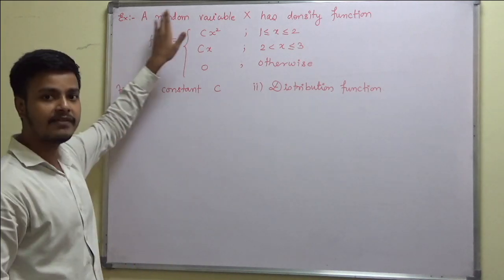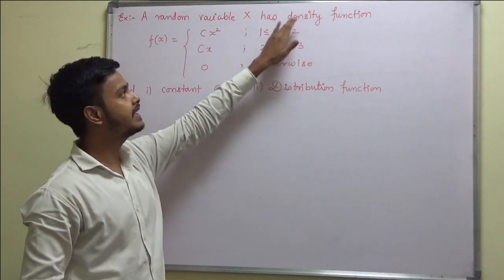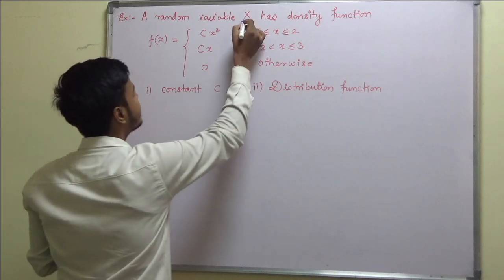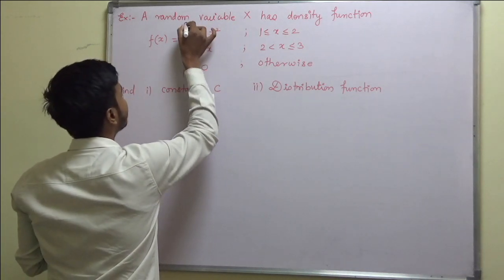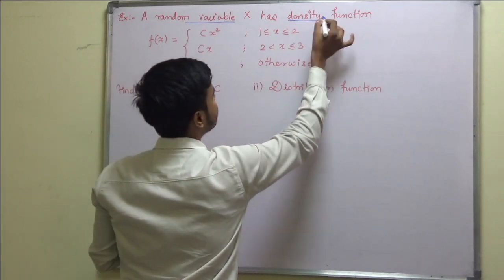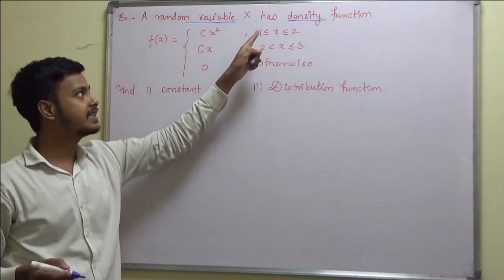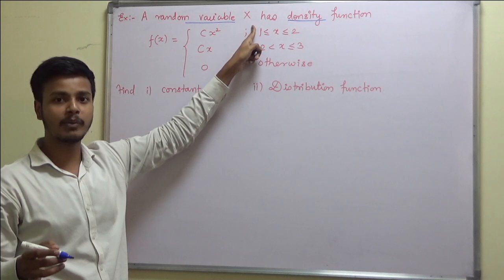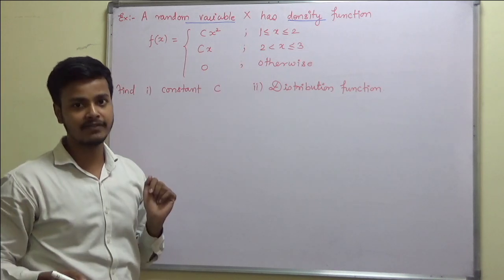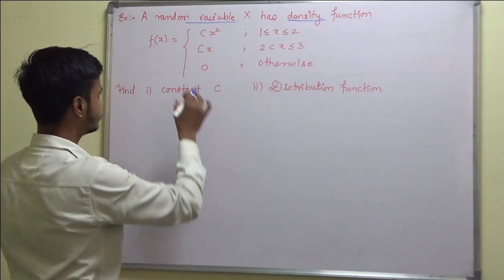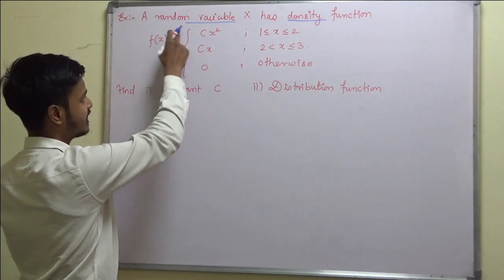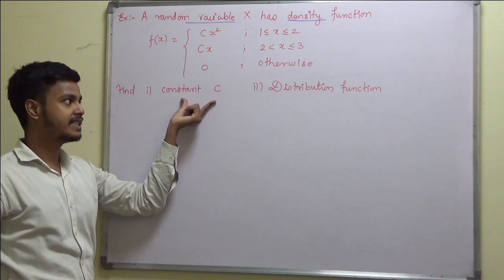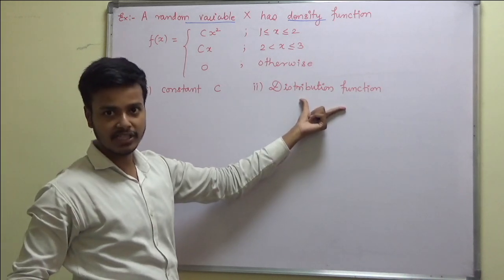The example says a random variable x has a density function. Whenever it says a random variable x density function, this gives an indication that this is a problem of continuous random variable. For the continuous random variable x, we have the density function, and we have to find out c and the distribution function capital F of x.